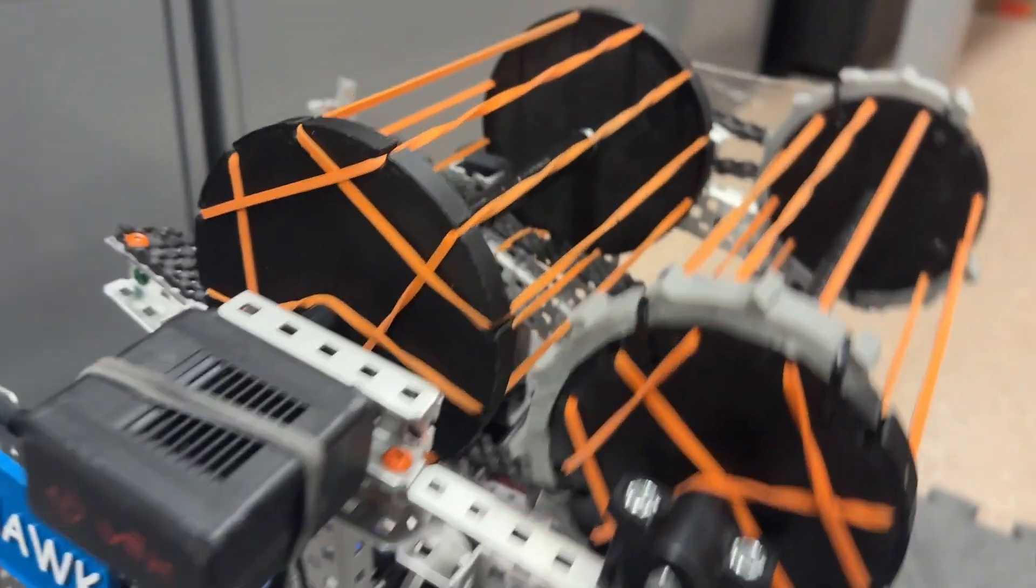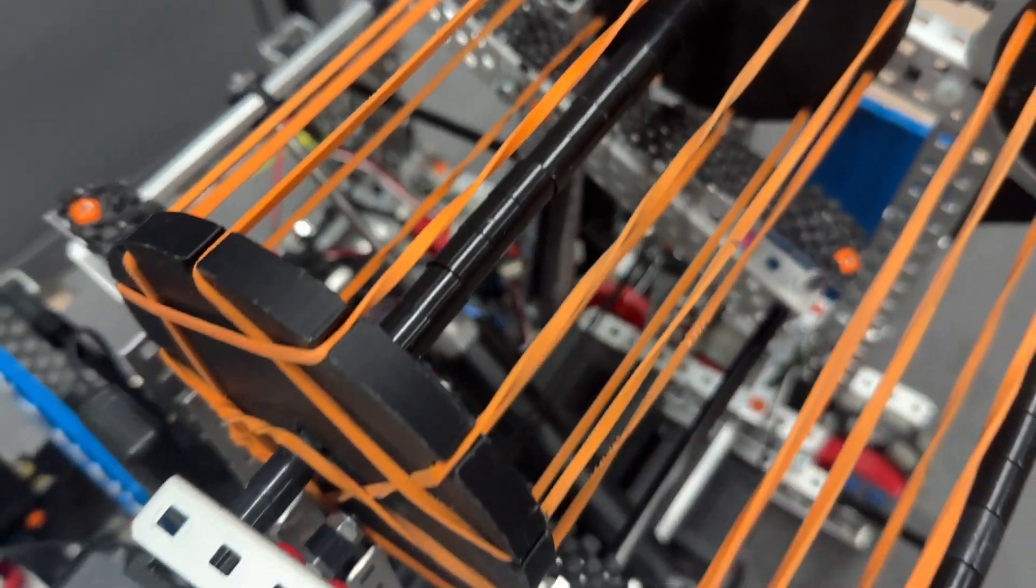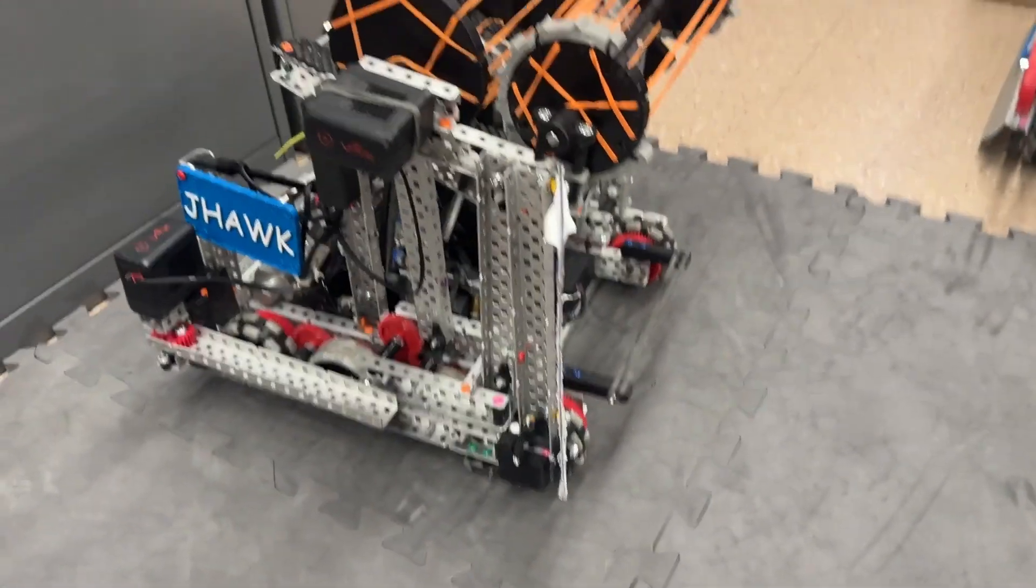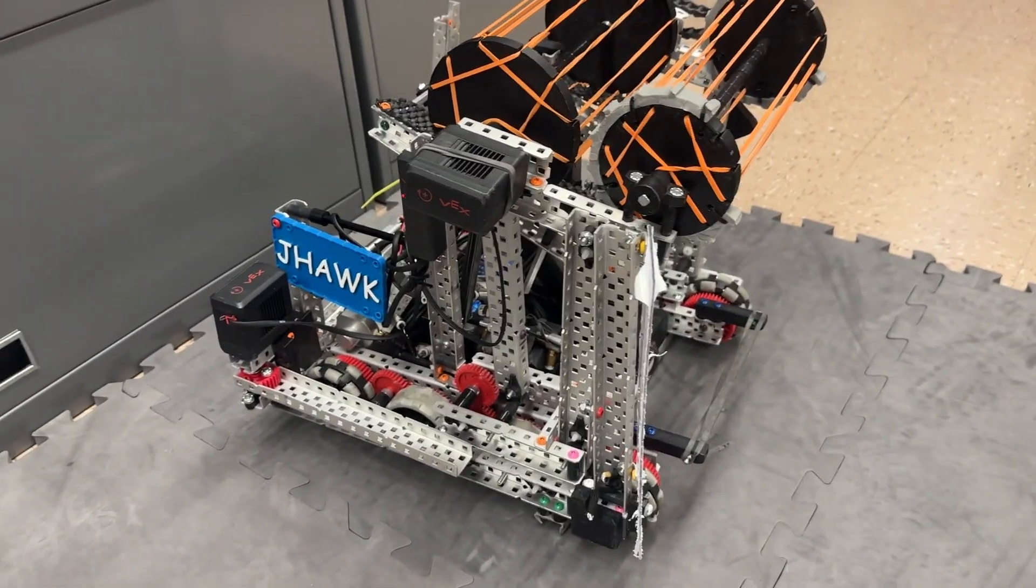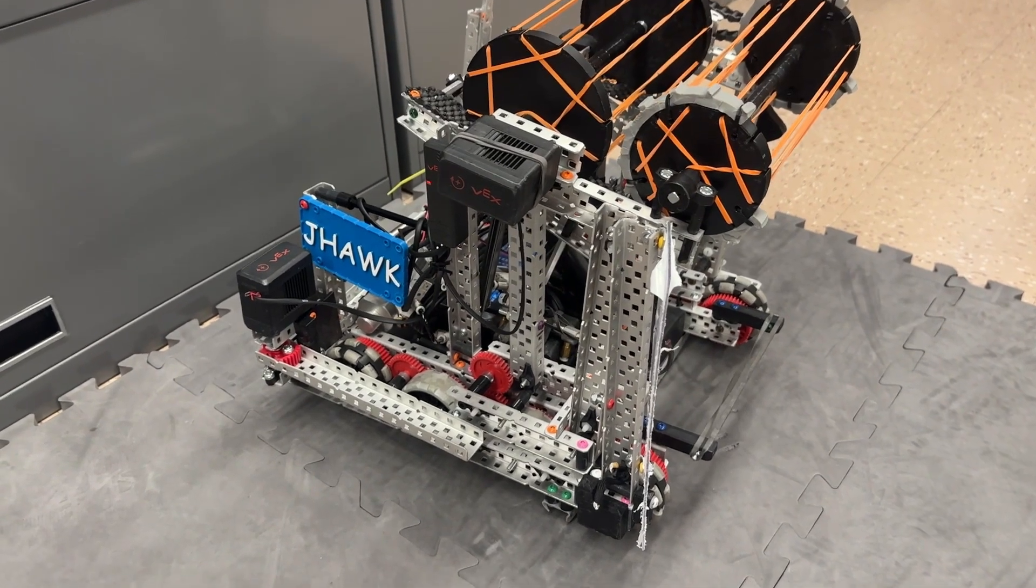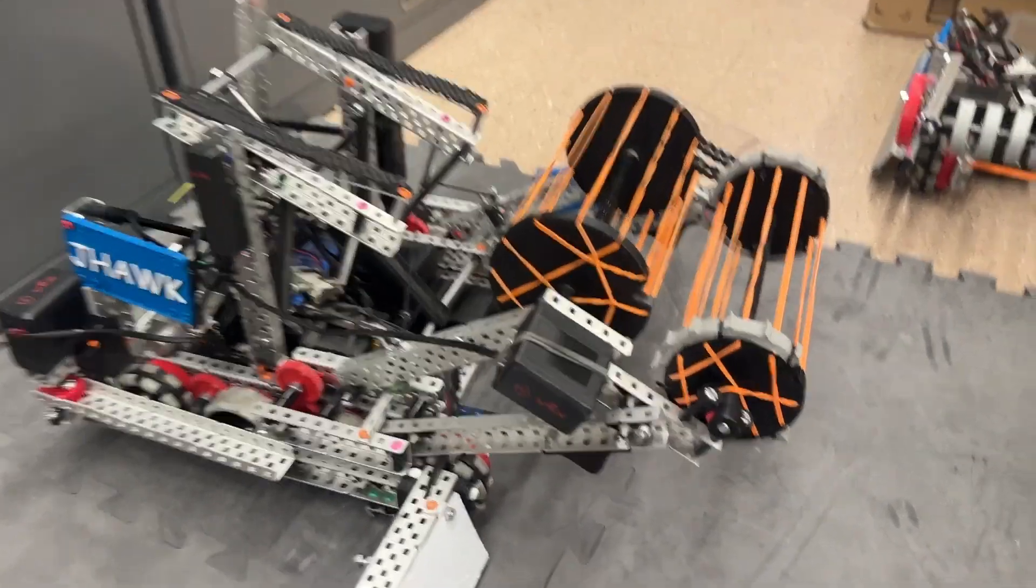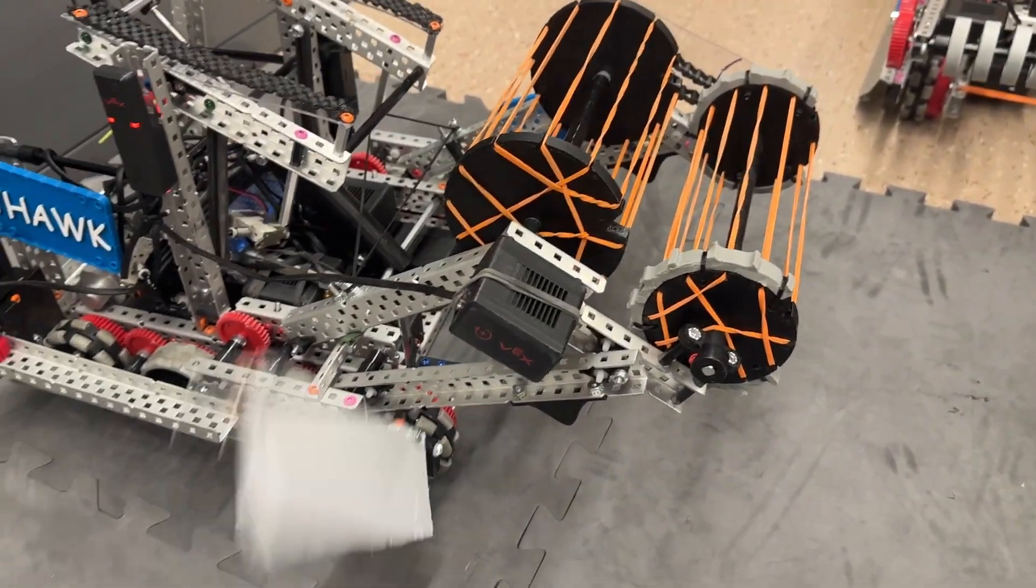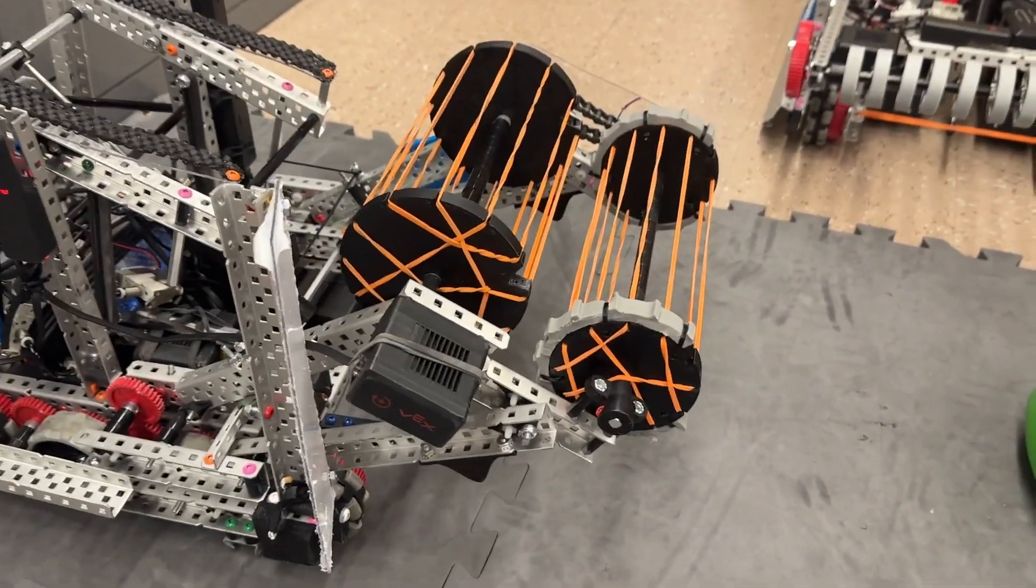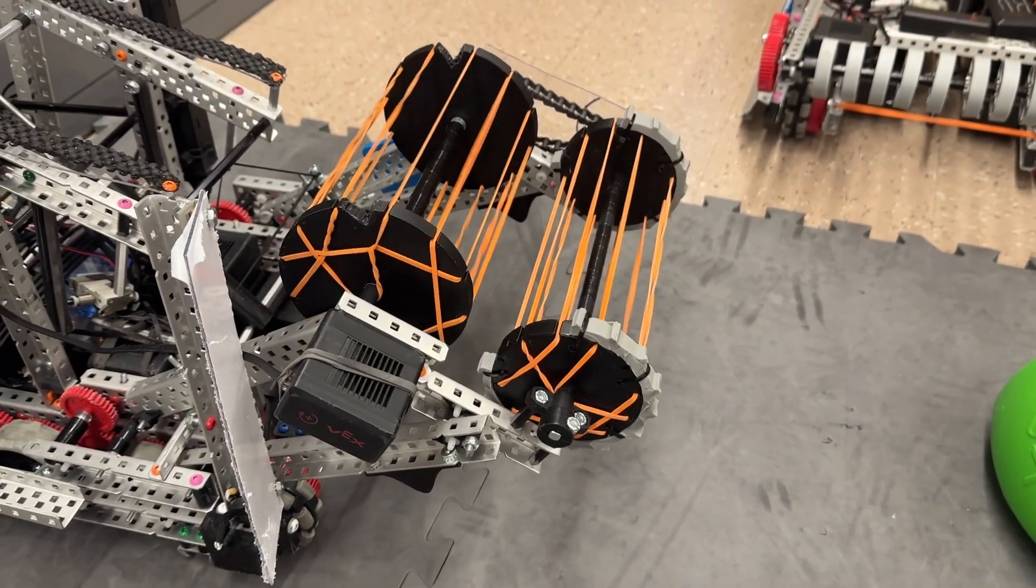And that entire intake deploys. We actually have a little ramp on top of our hang mech. So when you put the wing down, nope, that was the wrong button. There we go, wing down. Then the intake, you run it and it pulls itself off, and then you can put the wing back up. And then this intake would be down for the remainder of the match.